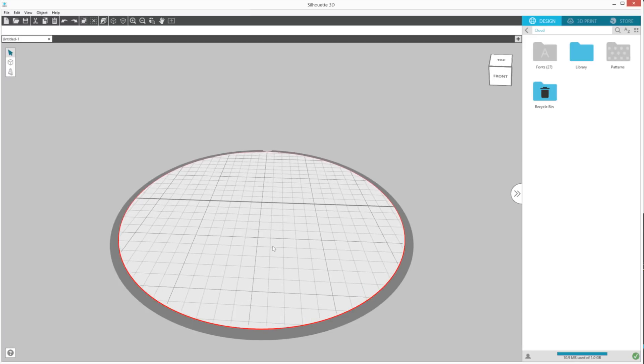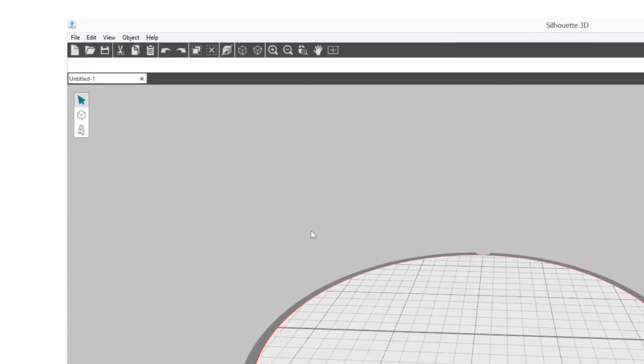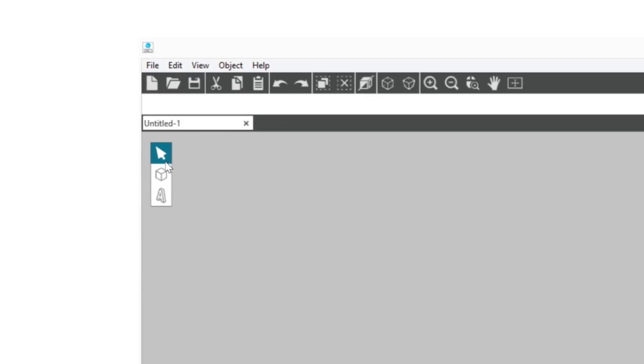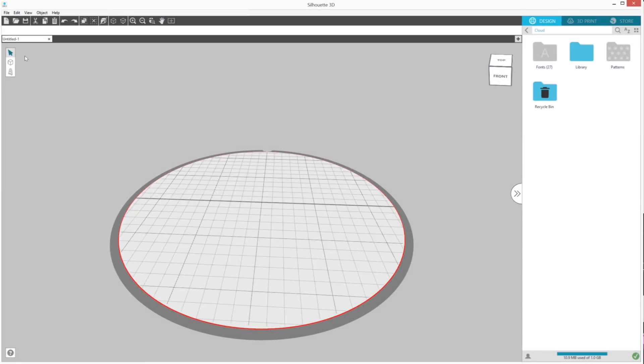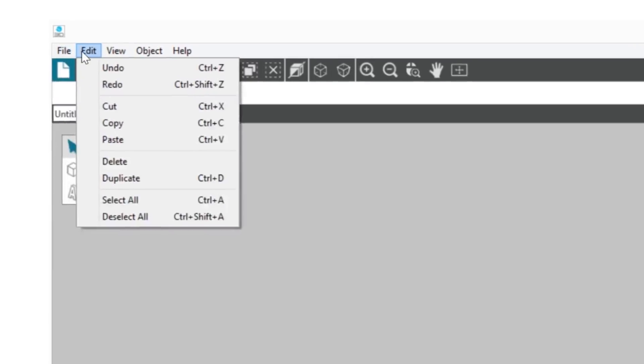There is a bar on the left-hand side where you will go to create your own shapes and text. At the top of the Silhouette 3D window, you'll see your document tools.